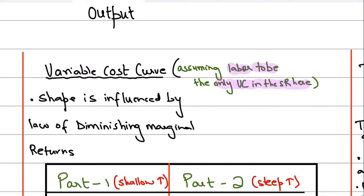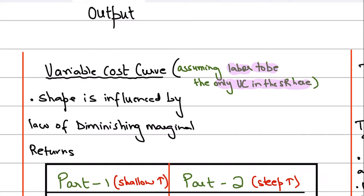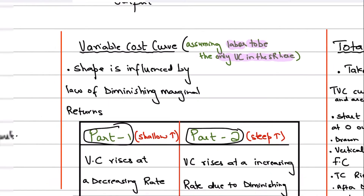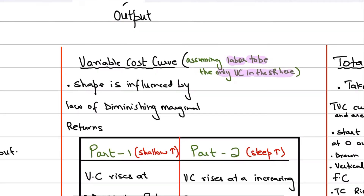The rate at which the variable cost rises will differ over the range of output, meaning the slope of the variable cost curve will change. The shape of the variable cost curve is influenced by the law of diminishing marginal returns. I'm dividing the variable cost curve into two parts: part one, where variable cost is increasing at a decreasing rate, and part two, where variable cost is increasing at an increasing rate.